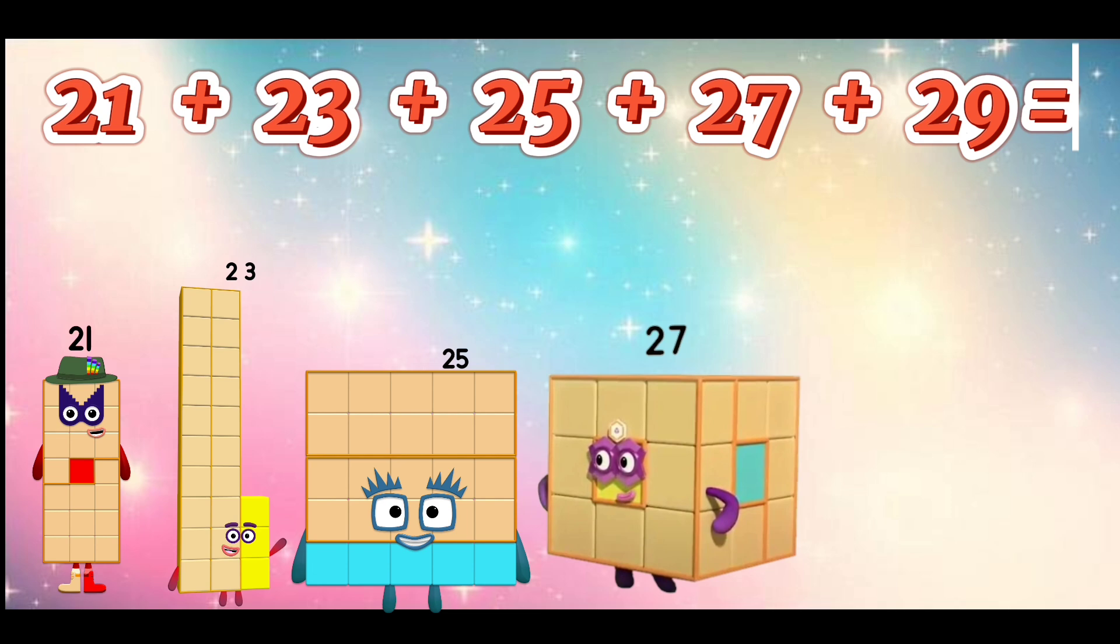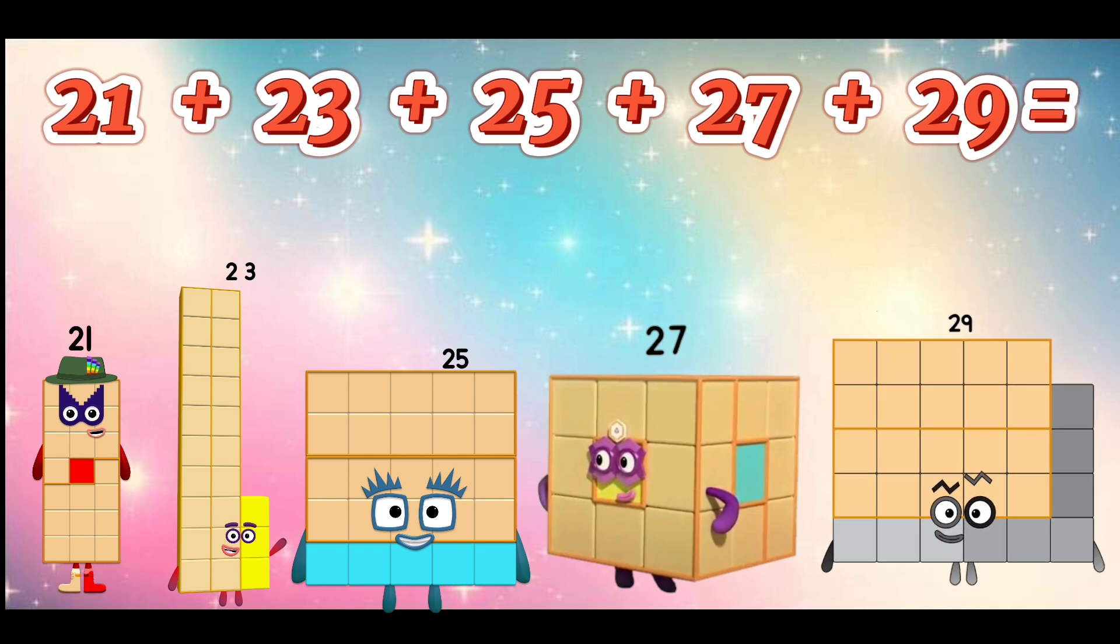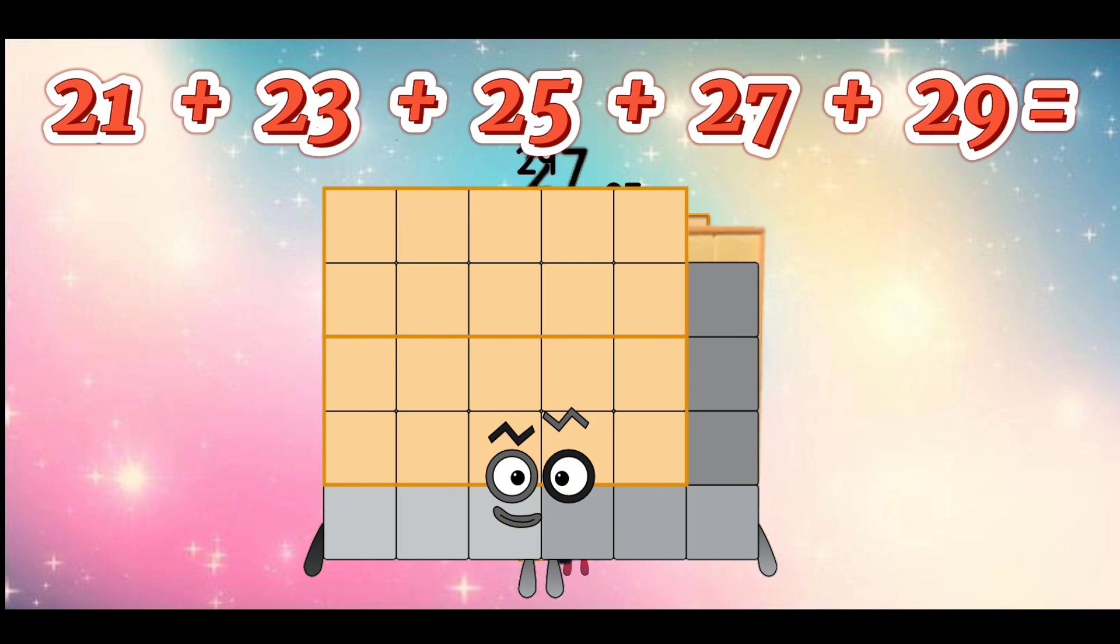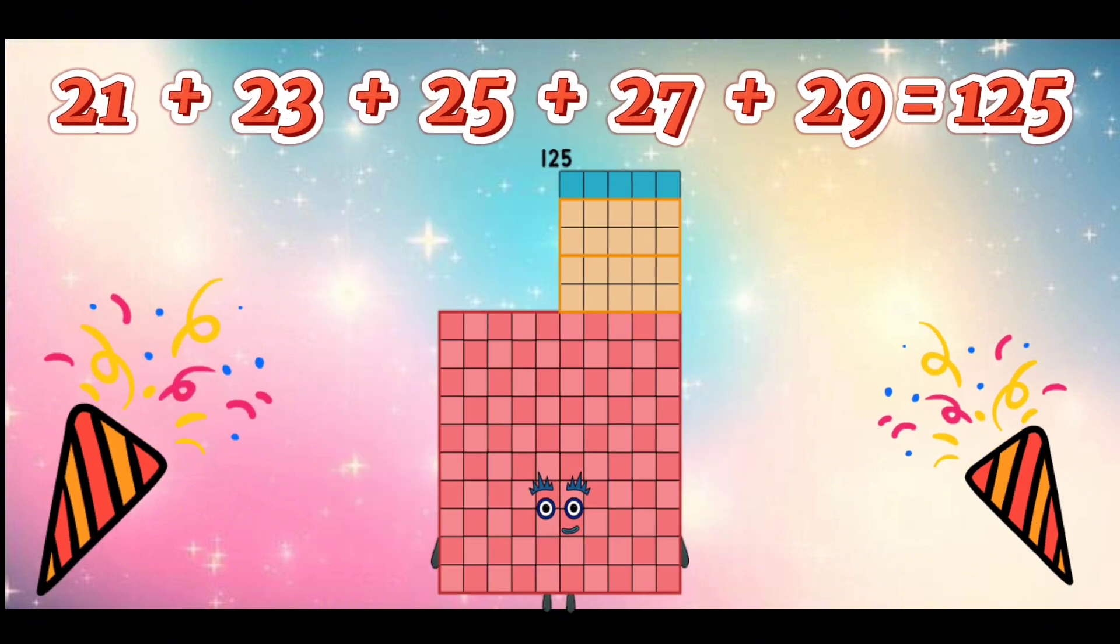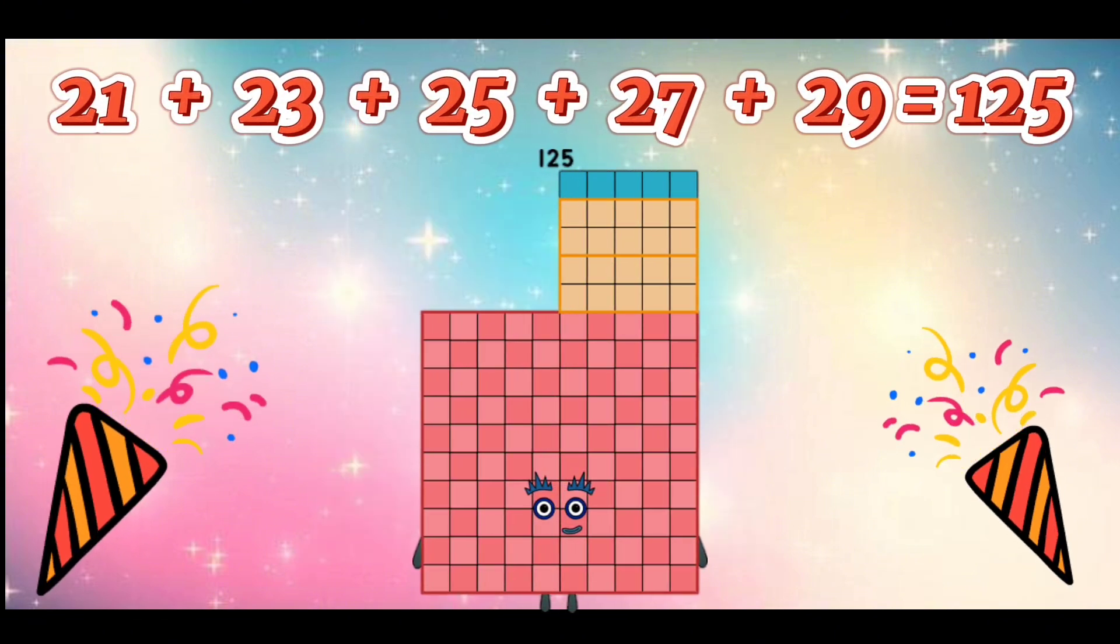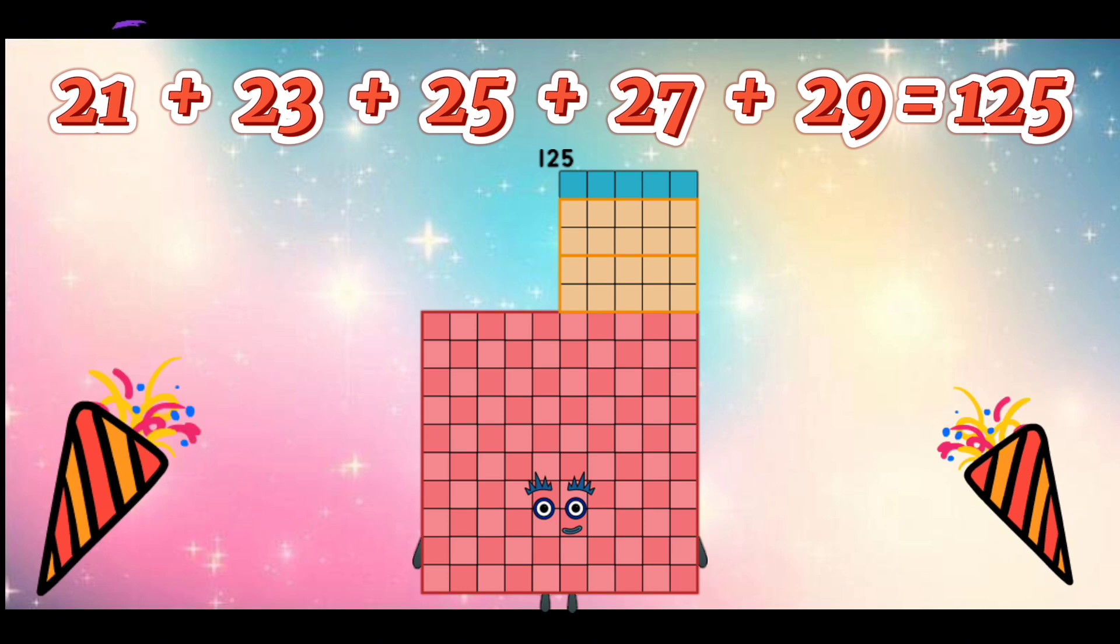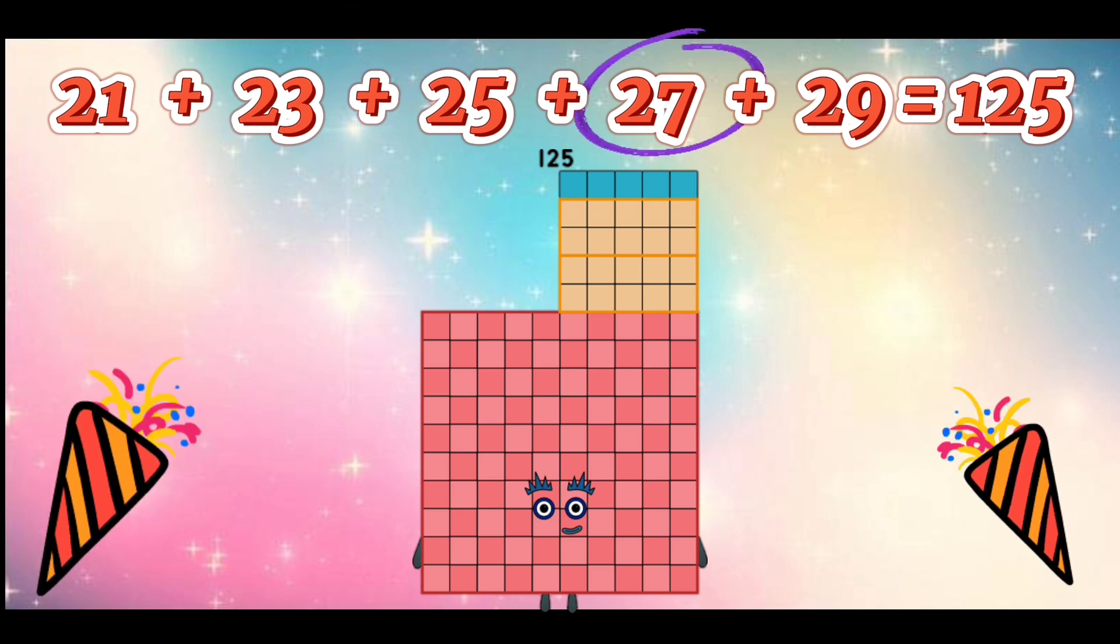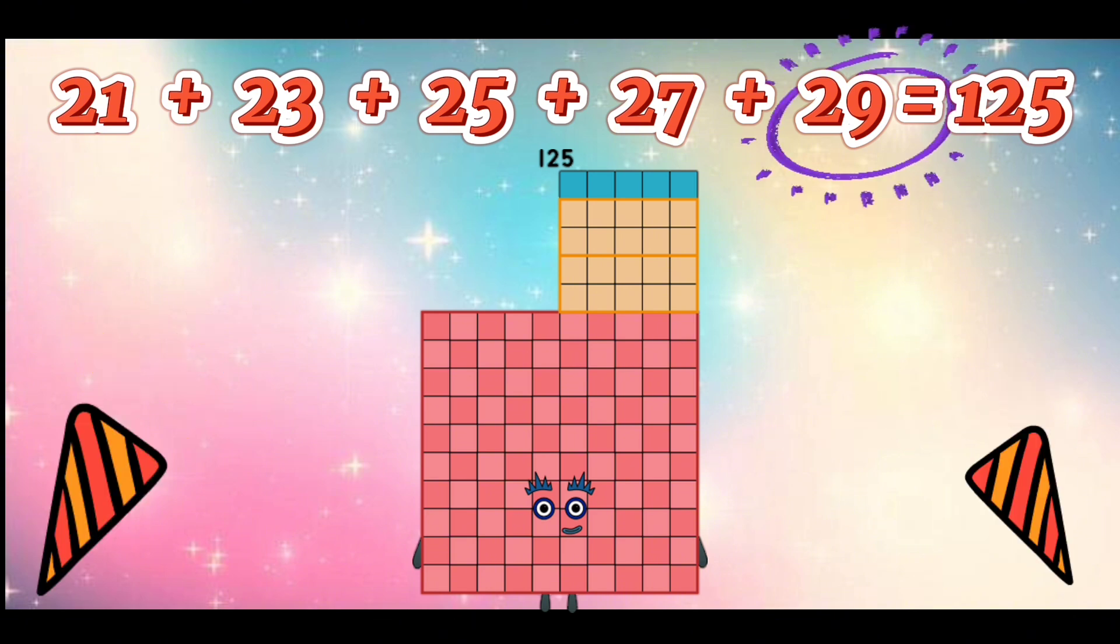plus 29 is equal to 125. Let's repeat. 21 plus 23 plus 25 plus 27 plus 29 is equal to 125.